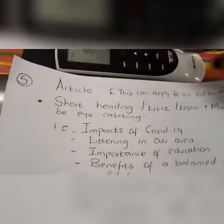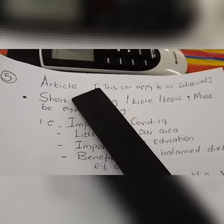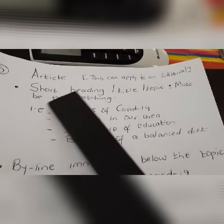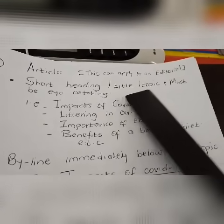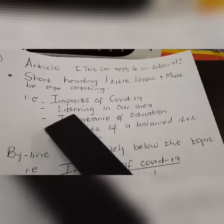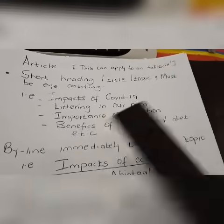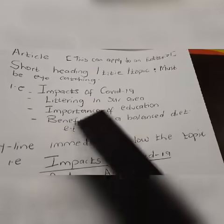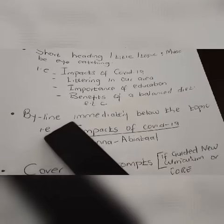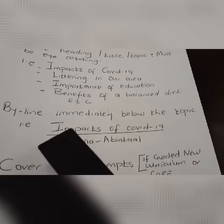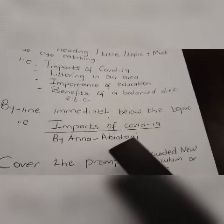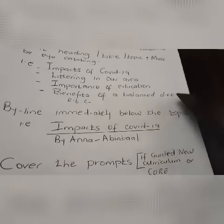Let us move on to an article. I'm going to discuss it together with an editorial because they are almost the same. All you need is a short heading — a title or topic — which must be eye-catching. For instance, you can have topics like 'Impacts of COVID-19,' 'Littering in Our Area,' 'Importance of Education,' or 'Benefits of a Balanced Diet.' After your topic, you can have your byline immediately below — for instance, 'By Ann Abiatal' — and you can add the date if you wish.